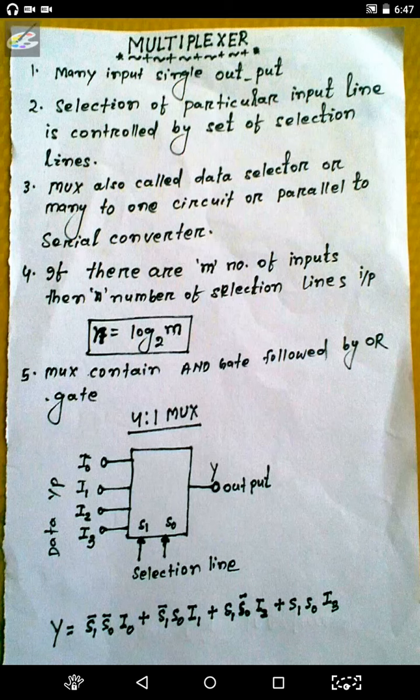The selection of a particular input line is controlled by a set of selection lines. There are 2 to the power n input lines, where n is the number of selection lines. MUX is also called a data selector, many-to-one circuit, or parallel-to-serial converter.